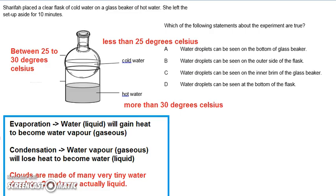We also have the surrounding air and water vapor in the surrounding air, which is about 25 to 30 degrees Celsius. We have water vapor inside the beaker, water vapor in the surrounding air, and water vapor in the space coming from the evaporation of the hot water. And we have cold water inside the flask.